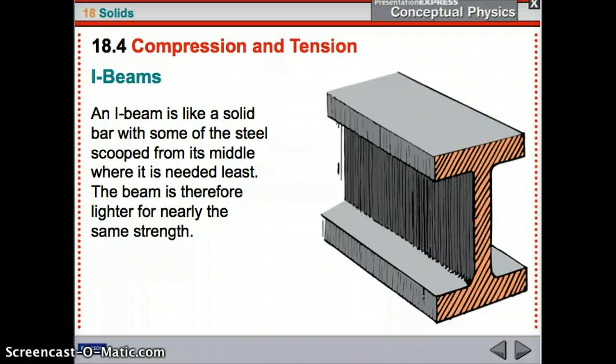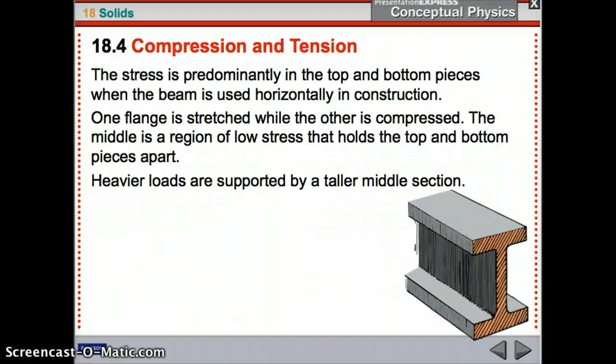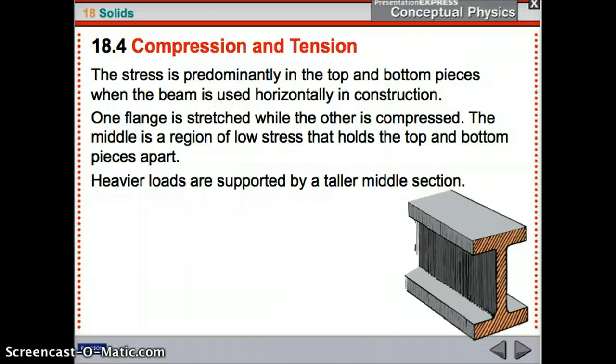Alright, so I-beams. We use I-beams a lot in construction. They look like an I, obviously, like you can see. So they just take out that middle section. So you lose a lot of weight. But they have the same amount of strength due to physics. So the stress is pretty much in those top and bottom pieces. One will get stretched and the other will get compressed. The middle one is that neutral layer. So nothing really happens in the middle section. If you have a heavier load, you get a taller middle section.